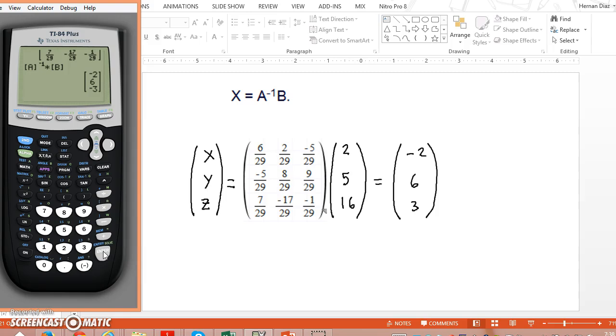Negative 2, 6, and 3. So that's the way we find the inverse of the matrix using the TI-84, and that's the way we find also the solution. So, x equals negative 2, y equals 6, and z equals negative 3.